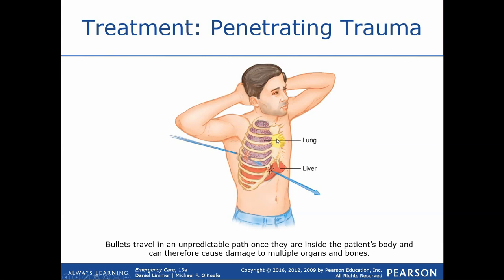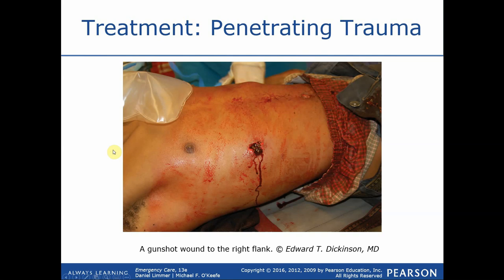With bullet wounds there's just so much going on — potential involvement of the liver, the lung, rib injury — we really have to have a heightened index of suspicion. Here's an entrance wound that doesn't show a lot of bleeding externally, but I can see we're right toward the bottom of the rib cage. I know there's a high likelihood the liver is going to be involved, so although I don't see a lot of external hemorrhage, I can predict based on mechanism that there's going to be substantial hemorrhaging internally.